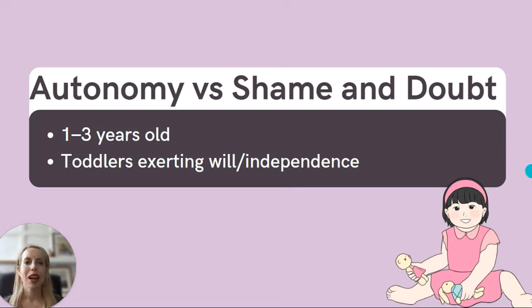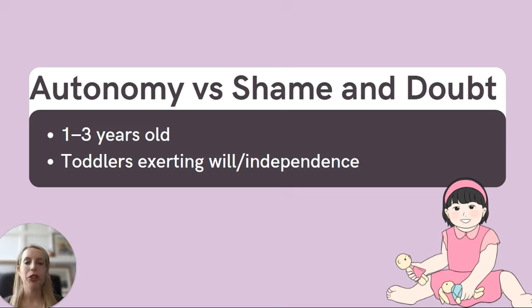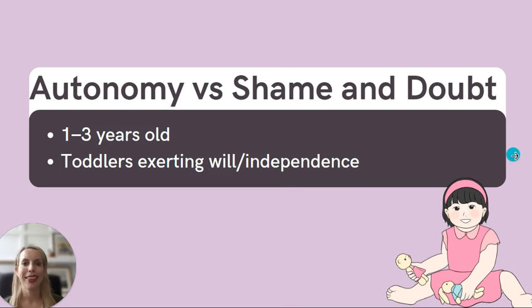Next up, we have autonomy versus shame and doubt. This is from about one to three years old. Anyone who's been around a toddler knows that toddlers want to practice being independent and assert their autonomy whenever they can.